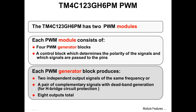The TM4C123GH6PM has two PWM modules. Each PWM module consists of four generator blocks and a control block, which determines the polarity of the signals and which signals get passed to the pins. Each of the generator blocks produces two independent output signals of the same frequency, or a pair of complementary signals with deadband generation. Deadband generation protects H-bridge motor driver circuitry. Four generator blocks times two outputs per generator provides eight total outputs, or four pairs.